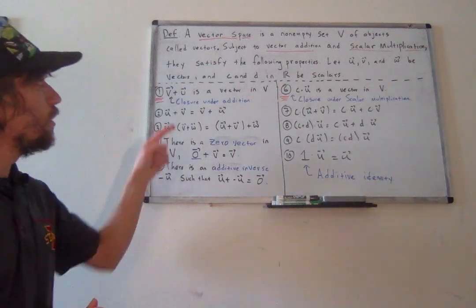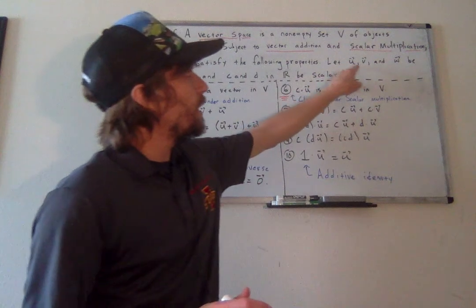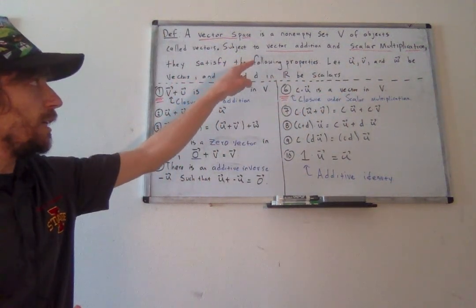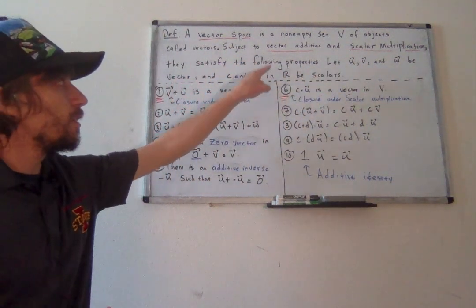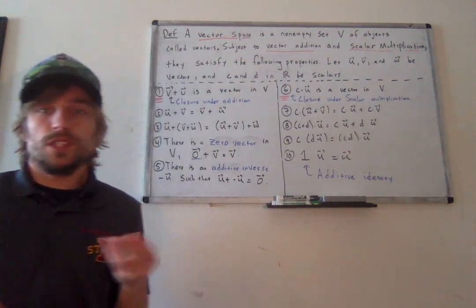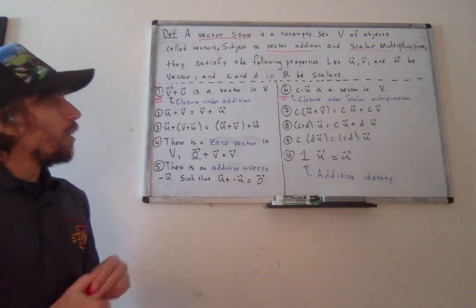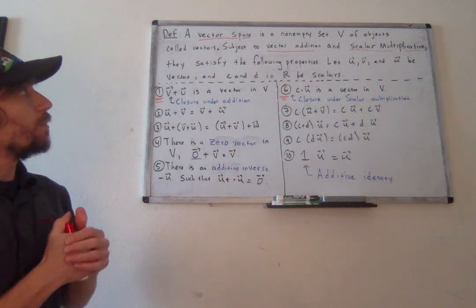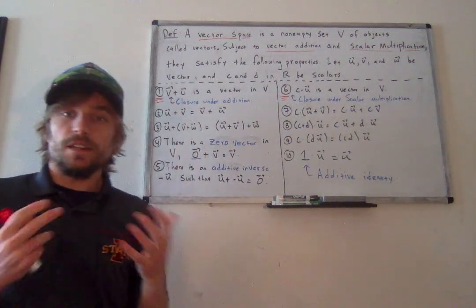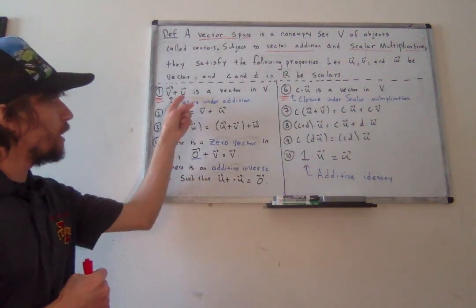What we require is that these two operations — vector addition and scalar multiplication — are subject to the following 10 properties. The five properties on the left concern vector addition, and the five properties on the right concern scalar multiplication. While discussing these properties, we're going to assume that U, V, and W are vectors in our vector space V, and C and D are scalars, just real numbers.